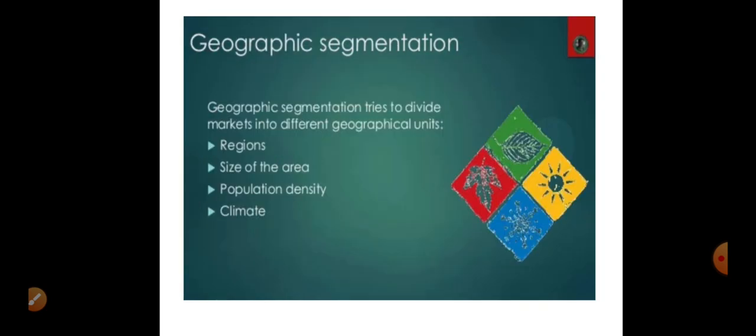When it comes to geographic segmentation, you can divide the market on the basis of region — for example, dividing India into North India and South India or different states. You can also divide based on area, population, or climate.